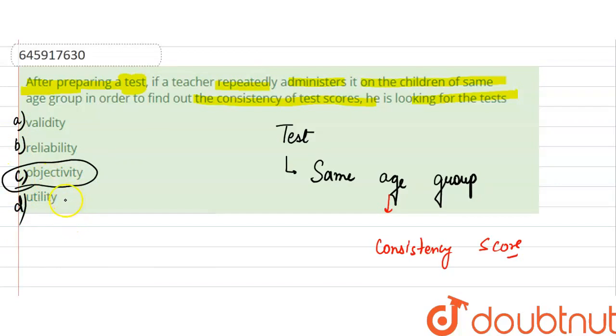Where is the objectivity coming from? Here we can say that the objectivity is not, we will not be able to say properly, but yes, you can say reliability. How reliable is it? If the score is consistent, that means the test is reliable for the age group, so here the correct option will be B. Thank you.